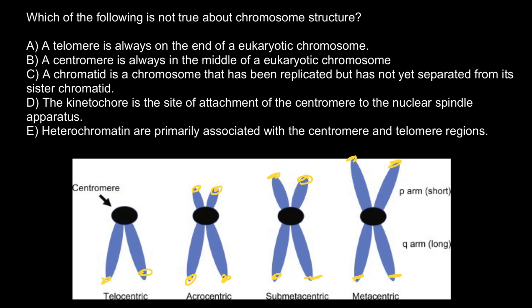Let's check the second variant, answer B: a centromere is always in the middle of the eukaryotic chromosome. As you can see, according to this picture, it is not true.